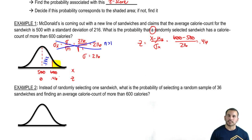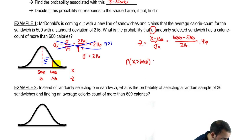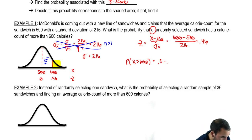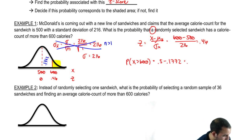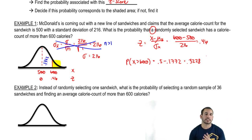But is that our final answer? No. We need the probability that x is greater than 600, which is the little tail end. So we do 0.5 minus that area: 0.5 minus 0.1772 leaves us with 0.3228. There's about a 32% chance that you get a random sandwich with 600 calories or more.